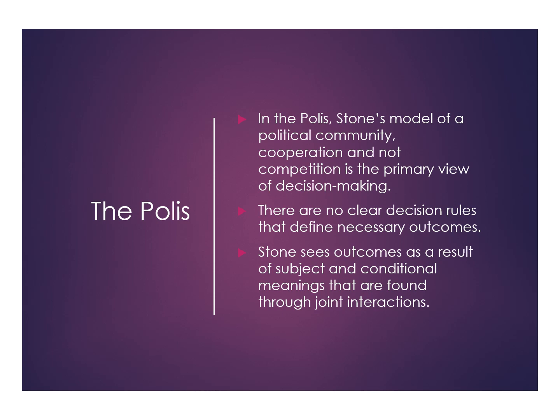Stone introduces us to this concept — this model of society — which she calls the polis. The polis is a term taken from the Greek city-state, but her conceptualization is not the actual Greek city-state. Rather, it is the smallest possible political community that still has all the important aspects of democracy, governmental structure, policies to be carried out, and decisions to be made by a group. For instance, a family would be too small, and a family generally has certain figures — parents — who tend to have more power than the other members of that tiny political community.